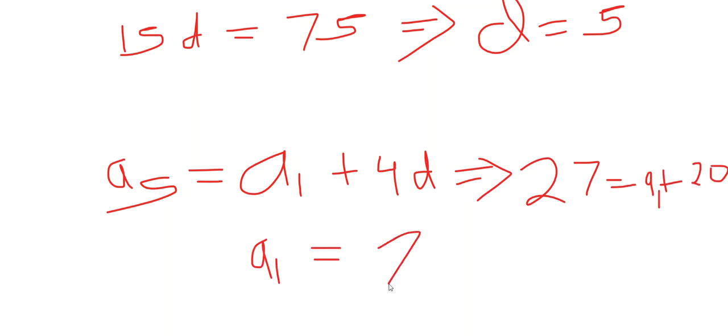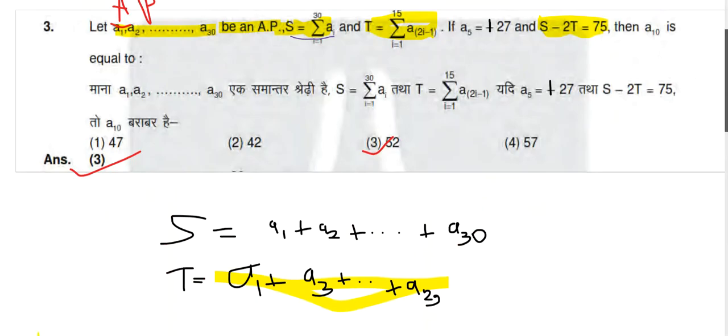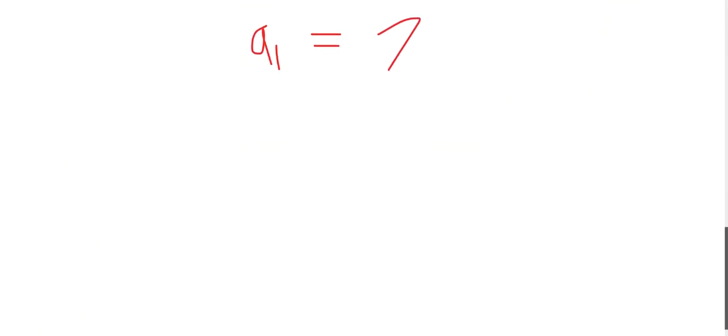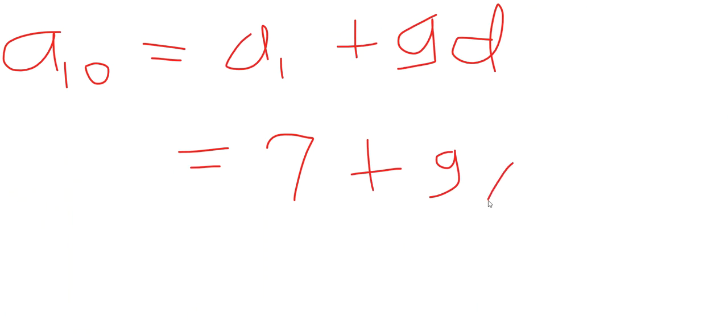Now we have the first term and we also have the common difference. Now we can get the complete term. It is asking just the tenth term. So the tenth term will be written as a10 = a1 + 9d. So 9 times the common difference, which was 5, gives 45 plus 7, which is 52. And this was our answer.